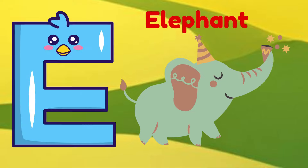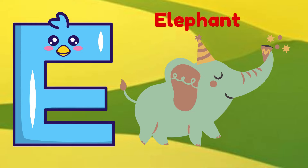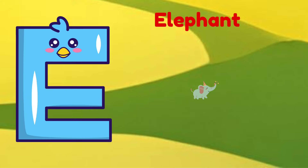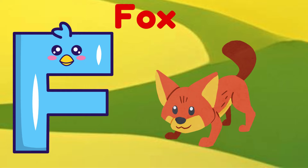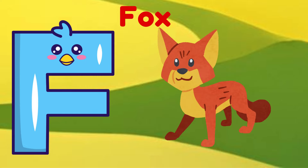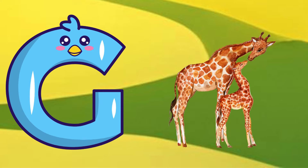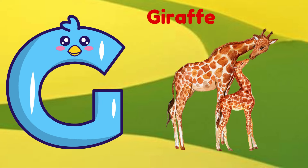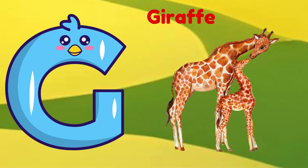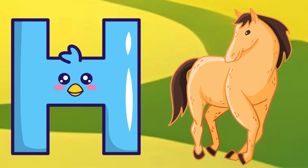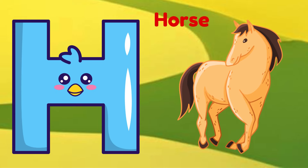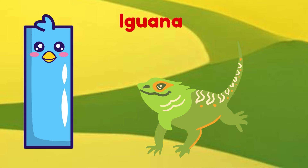E is for Elephant. E, E, Elephant. F is for Fox. F, F, Fox. G is for Giraffe. G, G, Giraffe. H is for Horse. H, H, Horse.